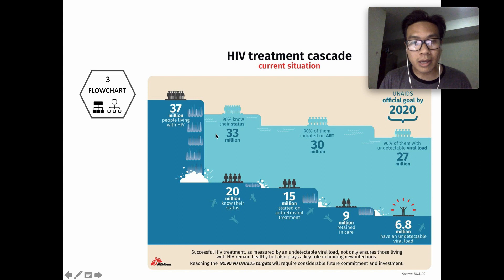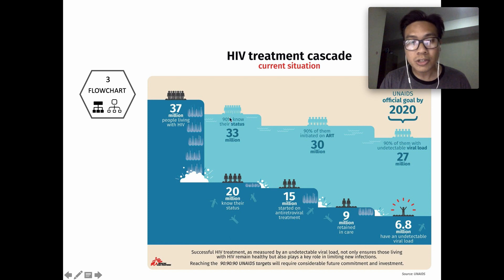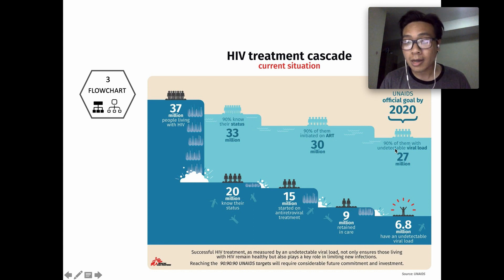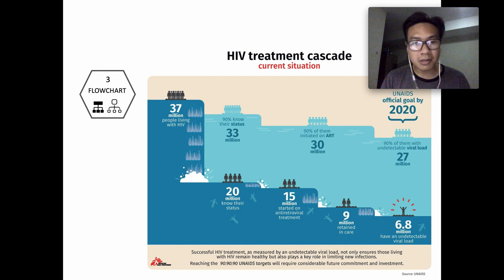There is additional information in the background about targets. They use a very light color and provide the 90-90-90 target: 90% know their status, 90% initiated on ART, and 90% virally suppressed. I think this is a piece of fantastic infographics.